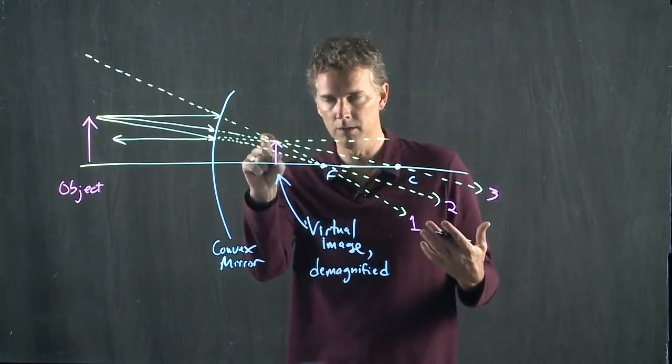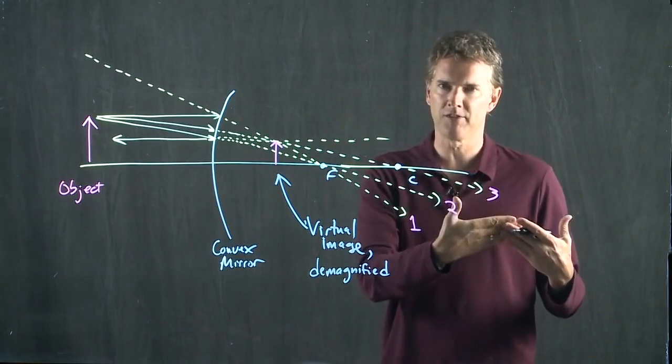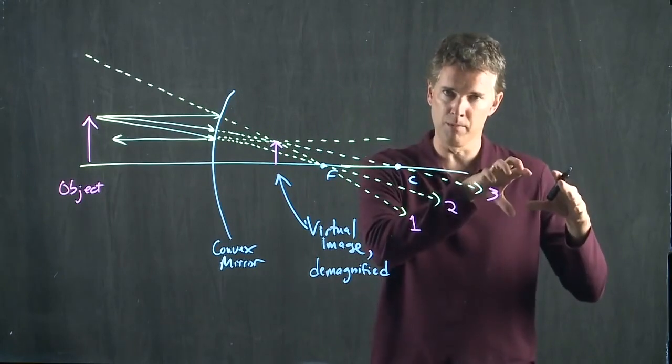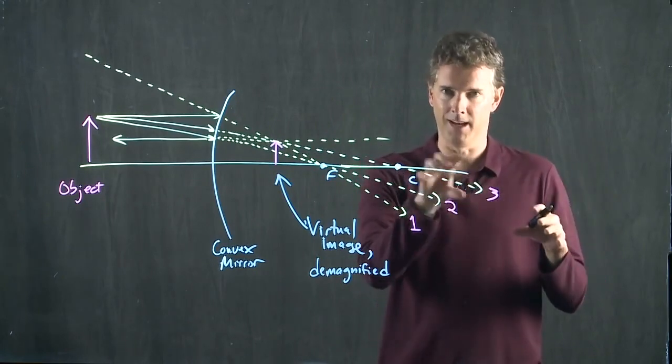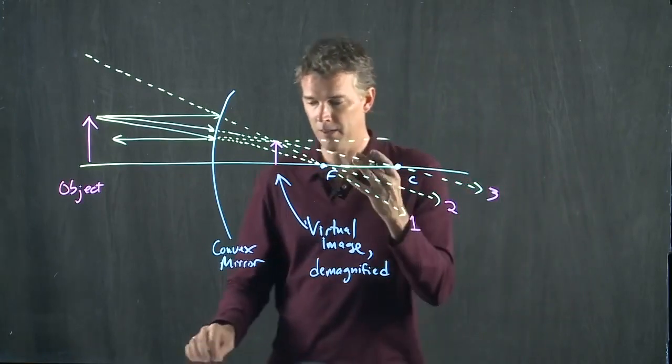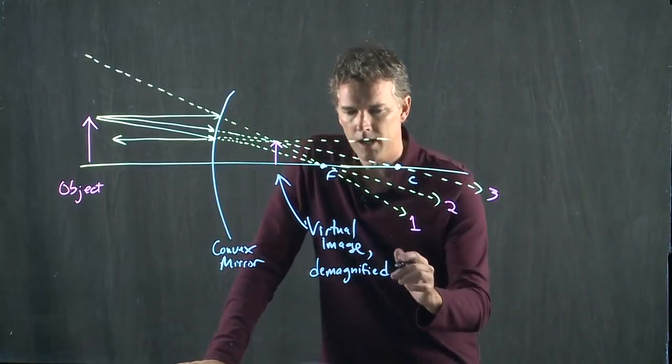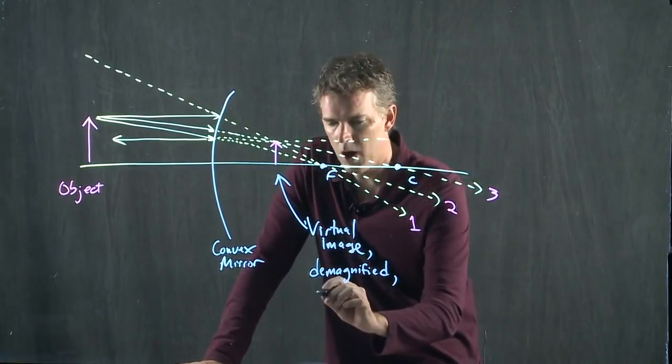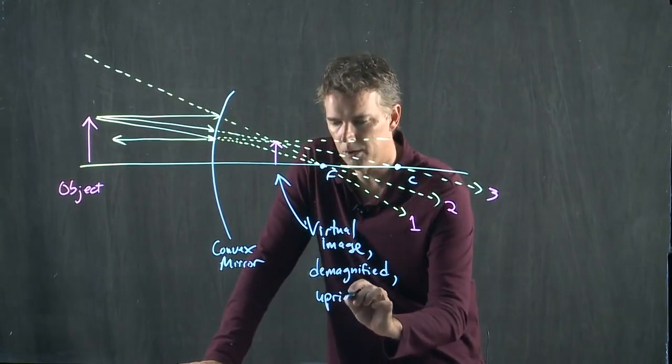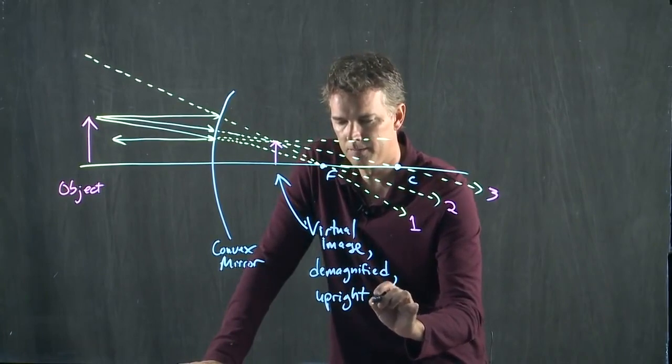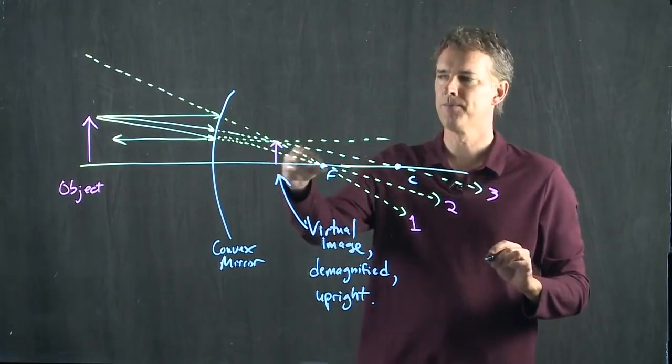Because it looks kind of small, right? And there's that great scene in Jurassic Park where he's looking in the rearview mirror at T-Rex and it says objects in the mirror may be bigger than they appear. And it is also upright as opposed to inverted.